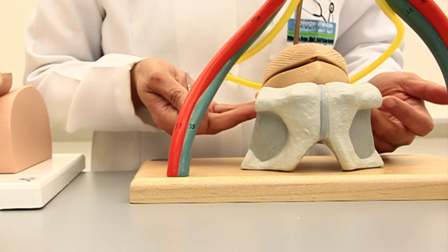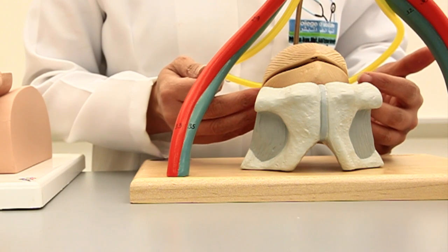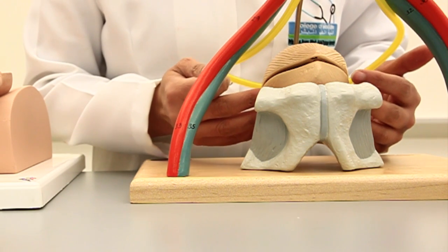As you can see in this model, the bladder is lying just behind the symphysis pubis, or pubic bone rather.